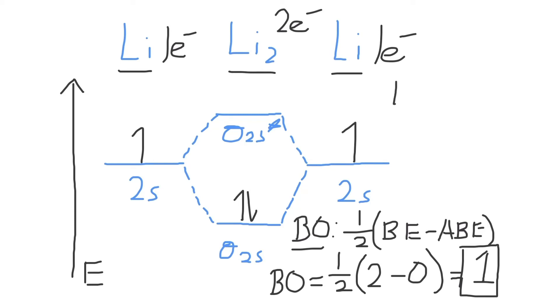Or in other words, there is a single bond that exists between the two lithium atoms. Here are two different representations of how you could draw this. This is our Lewis dot structure for the Li2 molecule.